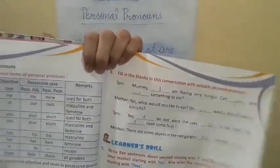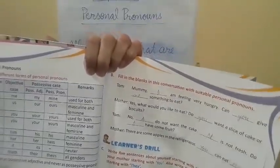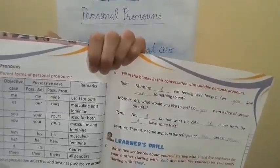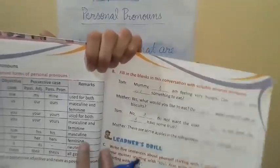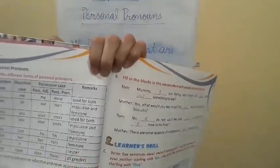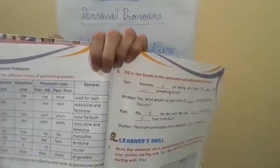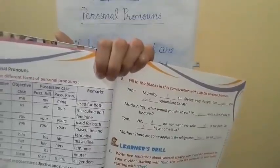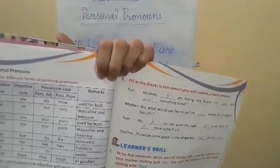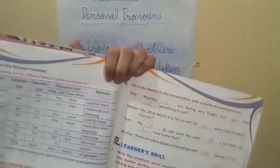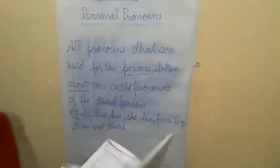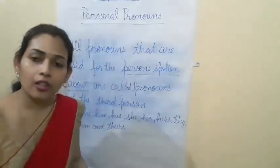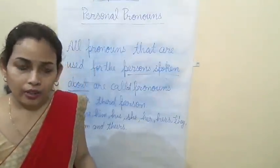Third person singular: he, him, his, his — used for masculine gender; she, her, her, hers — used for feminine; it — used for neuter gender. Plural: they, them, their, theirs — used for all genders. This chart is given on page number 44.